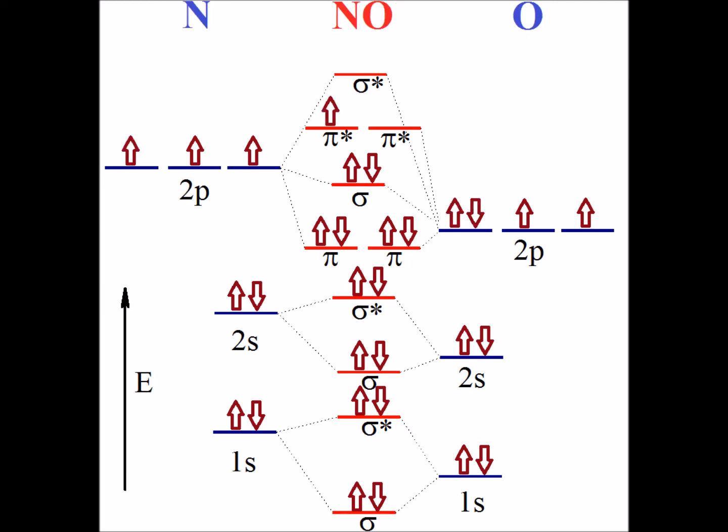Nitric oxide has 15 electrons. Therefore, its highest energy electron occupies one of the pi antibonding orbitals, whereas carbon monoxide and cyanide's highest energy electrons are in a fully filled sigma orbital.